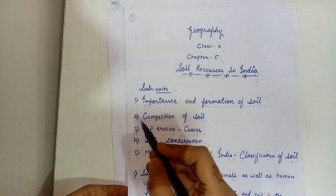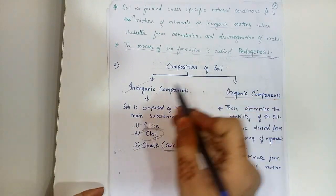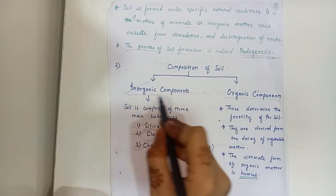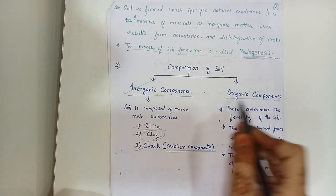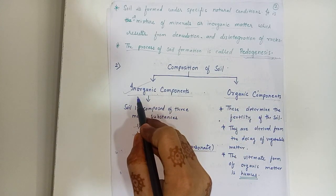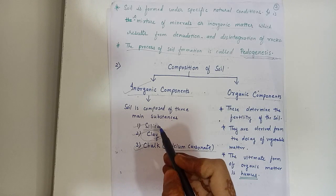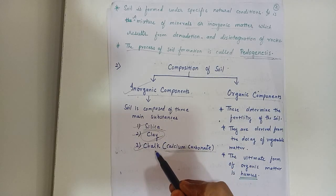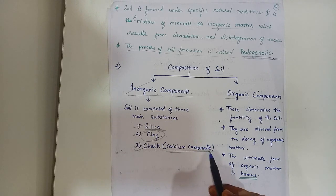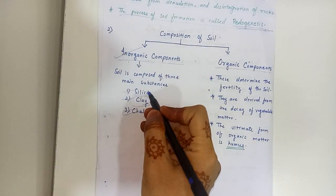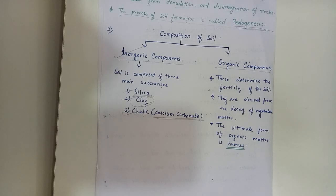Now come to the second point, composition of soil. It is divided into two terms: inorganic components and organic components. For inorganic components, soil is composed of three main substances: silica, clay, and chalk — also called calcium carbonate. Silica is present in the soil in the form of small crystalline grains. It is the main constituent of sand and is derived from the disintegration of rocks.